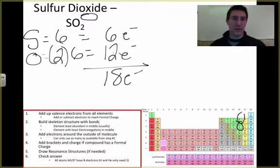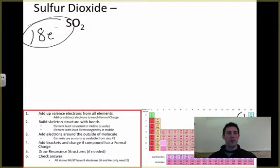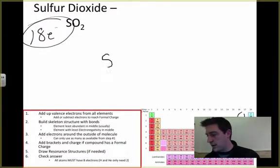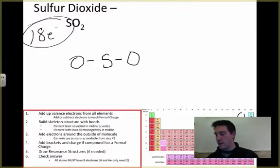Notice there is no formal charge, so we don't need to add or subtract any electrons. For sulfur dioxide, I'm going to put my sulfur in the center and attach an oxygen on each side. I've just used up four electrons in my skeleton structure.